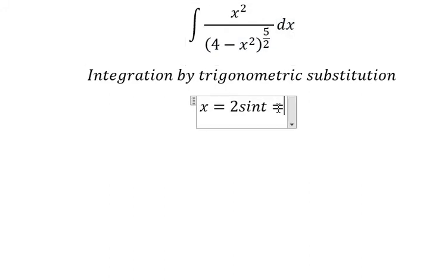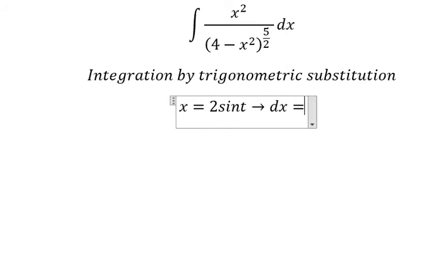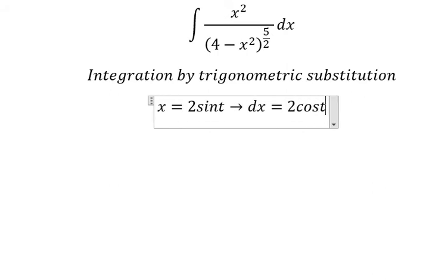Next we need to differentiate both sides. We get ds equals 2cos(t) dt.